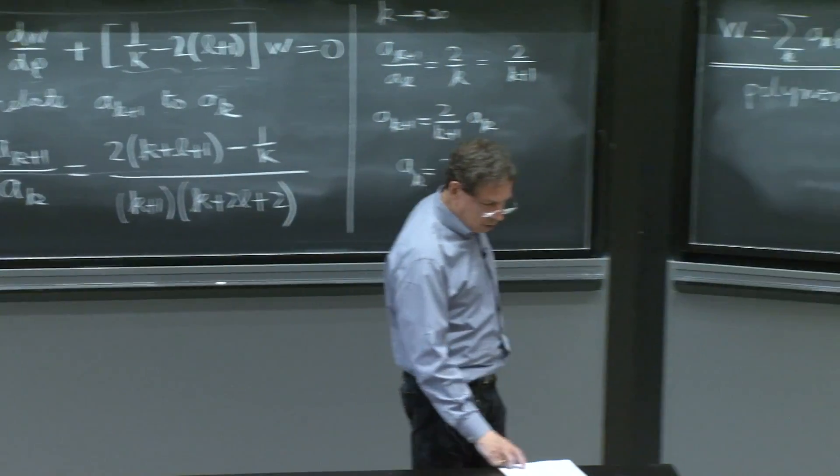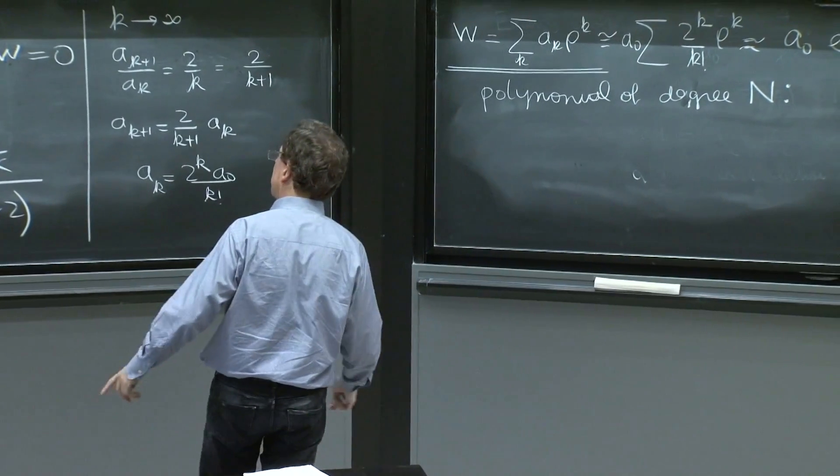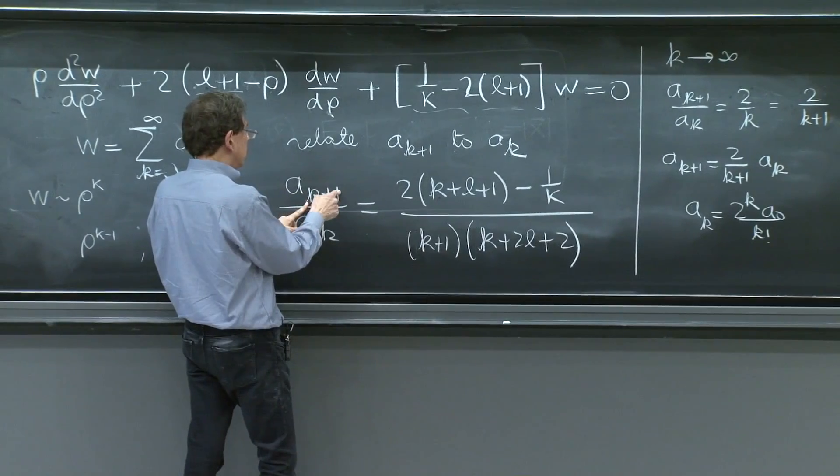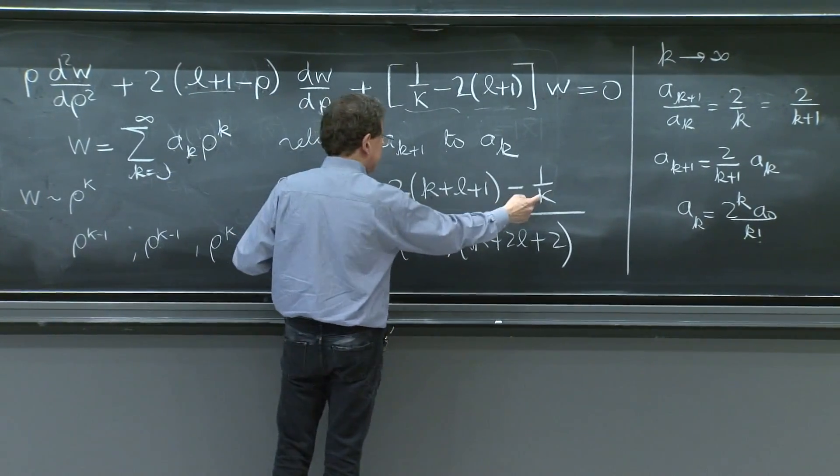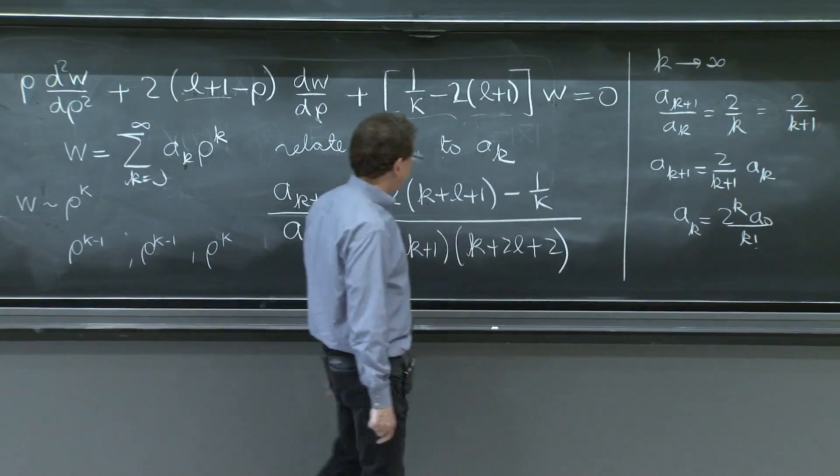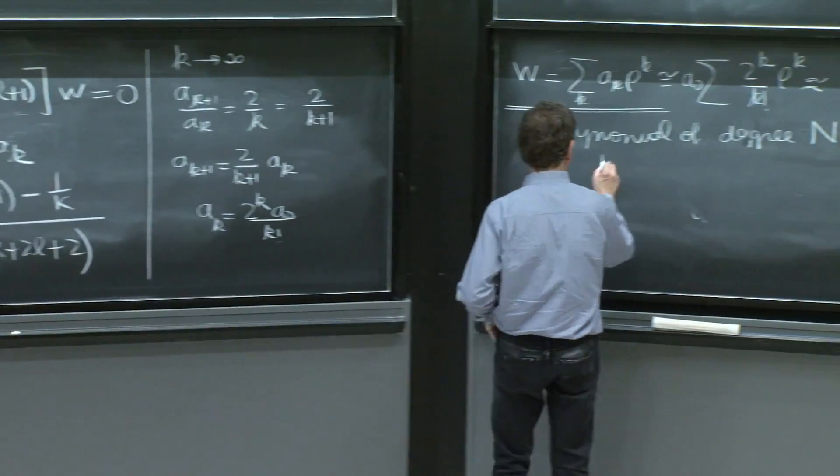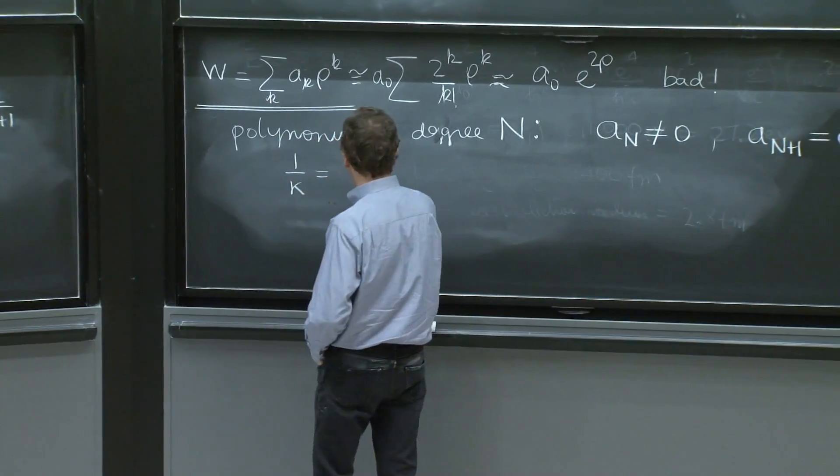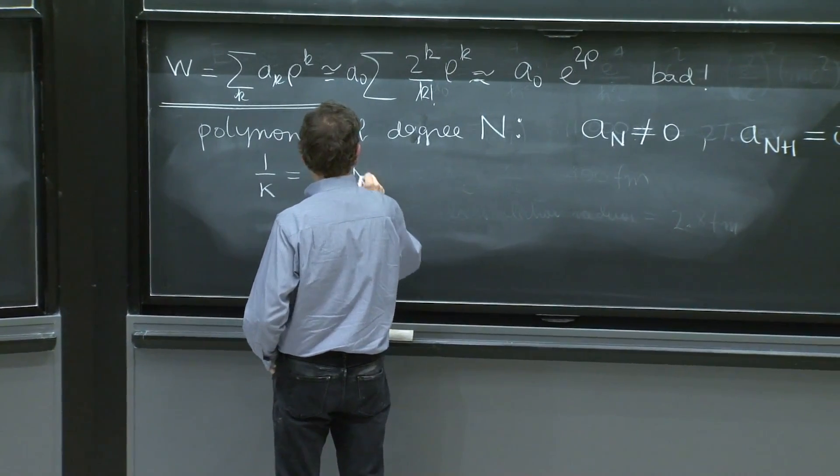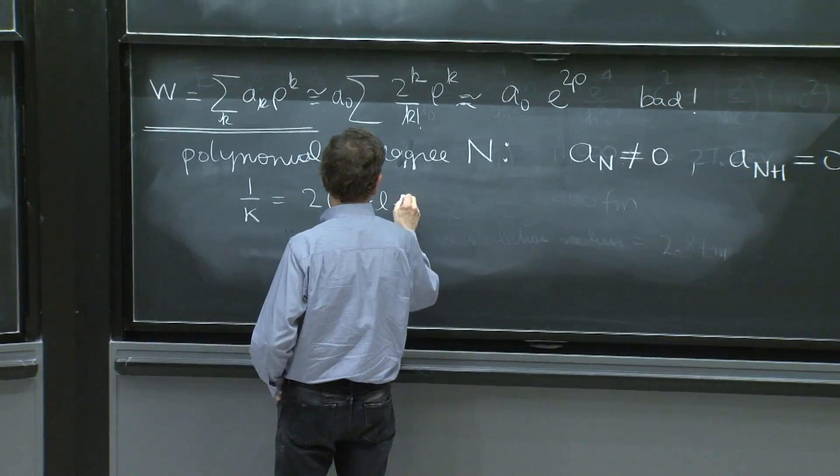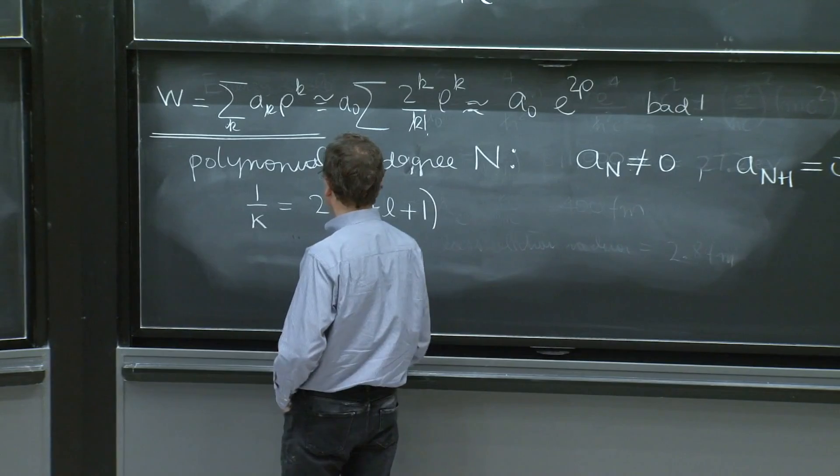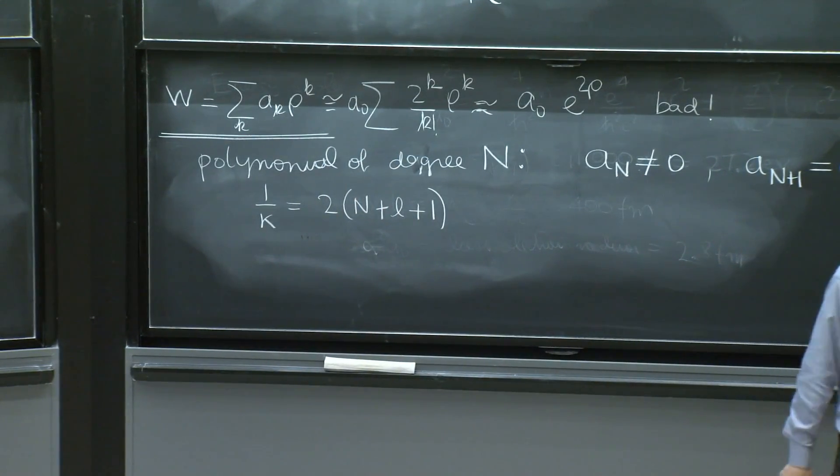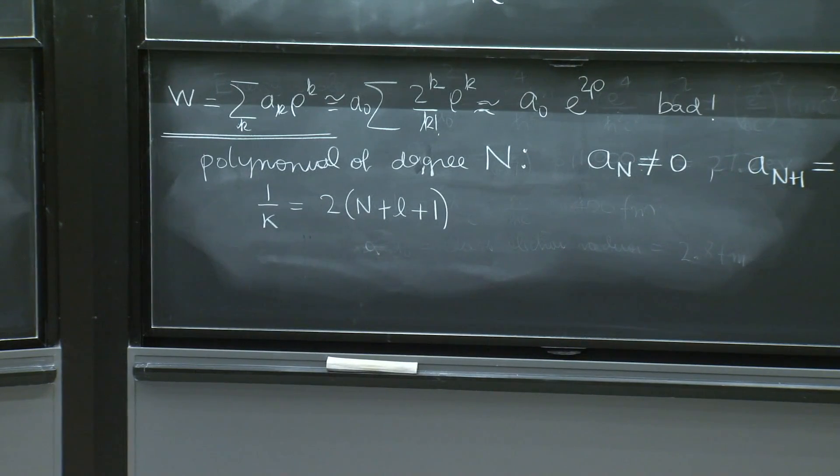So this is what should happen. But if that happens, think of this. Because you have AN plus 1 should be 0. So the numerator should have become 0 for k equals to N. So you have 1 over kappa is equal to 2N plus L plus 1. And in a sense, that's it. Whatever had to happen, happened.